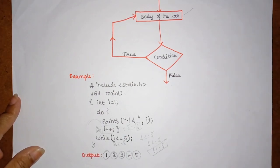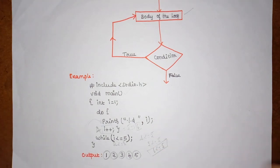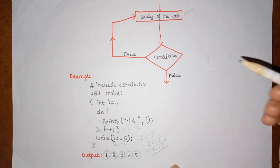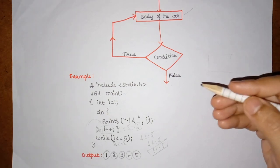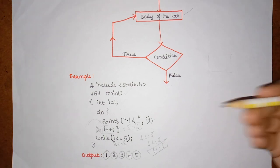We use do-while when we want to execute a block of statements at least once, irrespective of whether the condition is true or false. A real-time example is going to a hotel to order food. When you arrive, you must first look at the menu card — irrespective of any condition, the menu card must be seen at least once. Based on the menu card you then choose your food. This is the real-time analogy for the do-while statement.